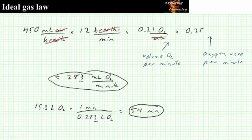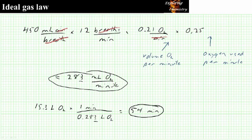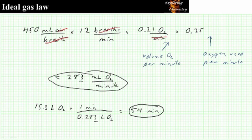So according to this calculation, oxygen will theoretically last 54 minutes. However, the fact that the person only uses 25% of available oxygen and other losses results in it only lasting about one quarter of this value, which is in the 10 to 15 minute range reported in the TV show.